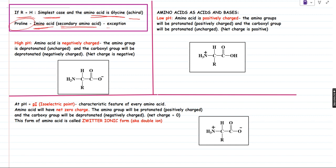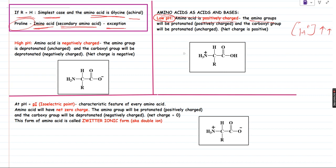Moving on to how amino acids behave as acids and bases. Under a low pH condition, the amino acid will be positively charged. Why? Because under low pH condition, the H+ concentration is going to be very high. As a result, the nitrogen atom of the amino group has a lone pair of electrons and hence it behaves as a base. So the amino group will be protonated and hence it will be positively charged, while the carboxyl group will also be protonated but uncharged. Hence the net charge will be positive.